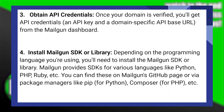Depending on the programming language you're using, you will need to install the Mailgun SDK or library. Mailgun provides SDKs for various languages like Python, PHP, Ruby, etc. You can find these on Mailgun's GitHub page or via package managers like pip, composer, etc.